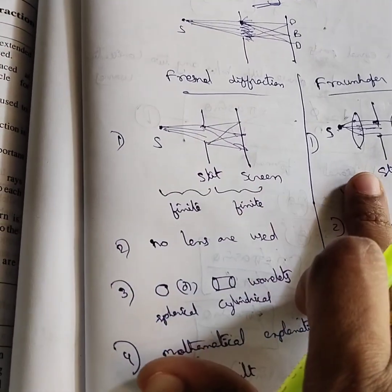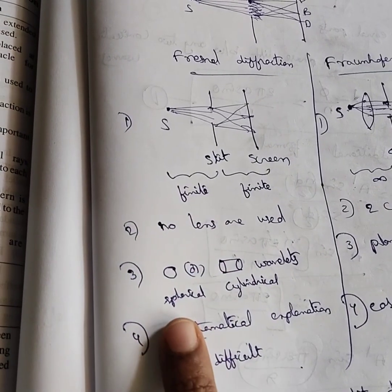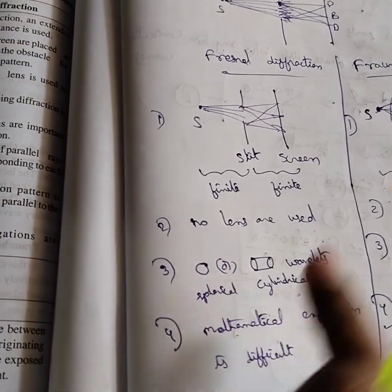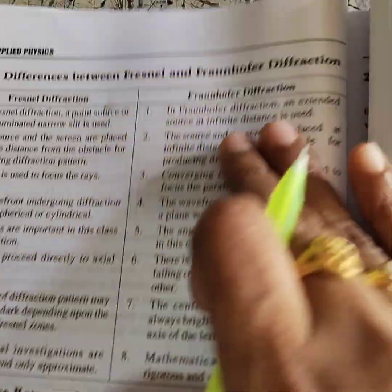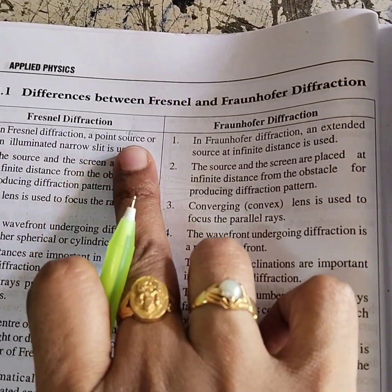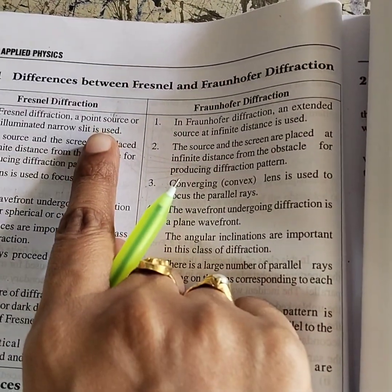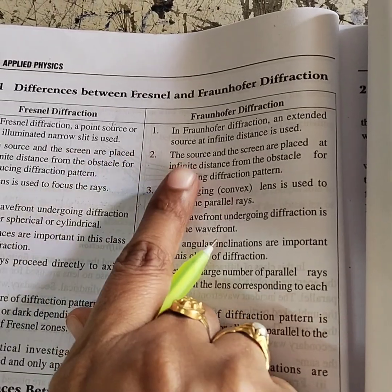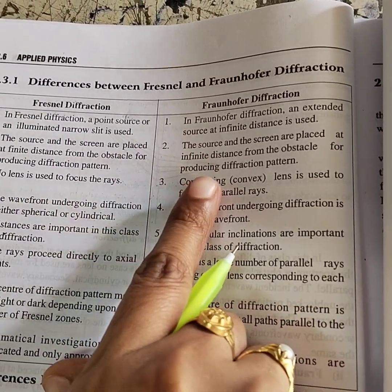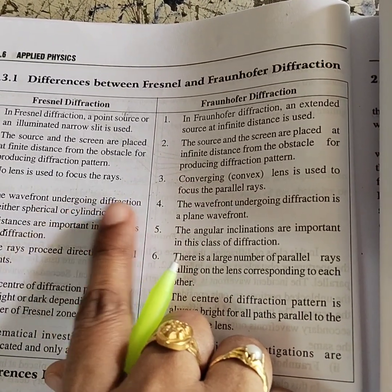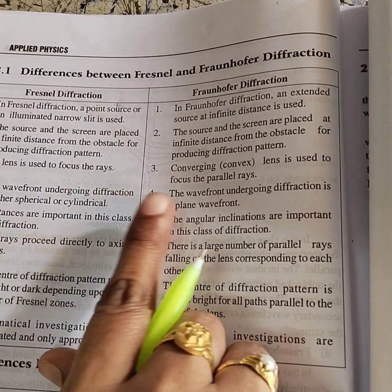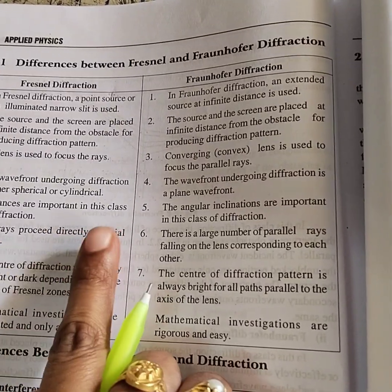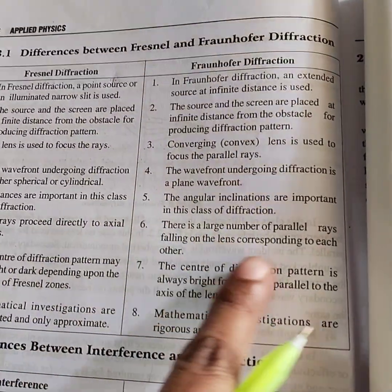At the finite and the infinite distances, from the point of view, we are discussing the differences. This is the easiest and difficult process. Here we have a point source. Here we have a finite distance and here is an infinite distance. Here we use a lens. Here we have a plane wave lens. Here we have a distance and here we have an angle. Here is an axial point. It can be parallel here.